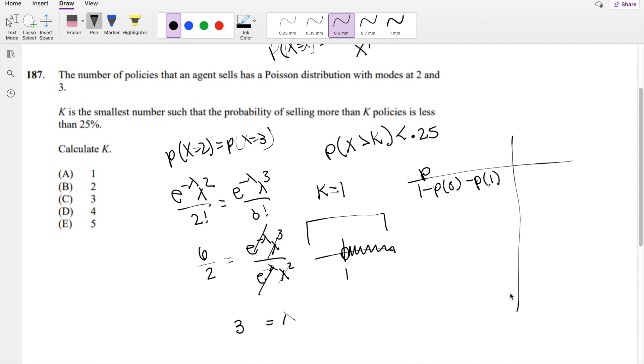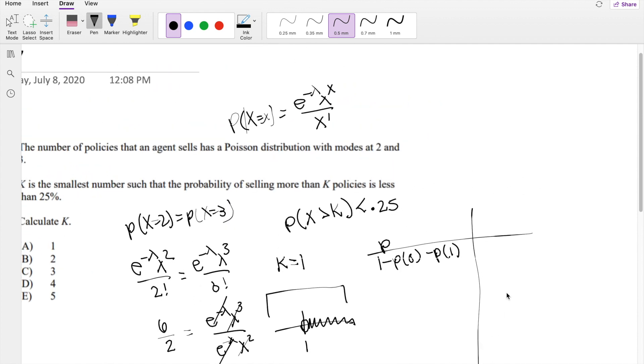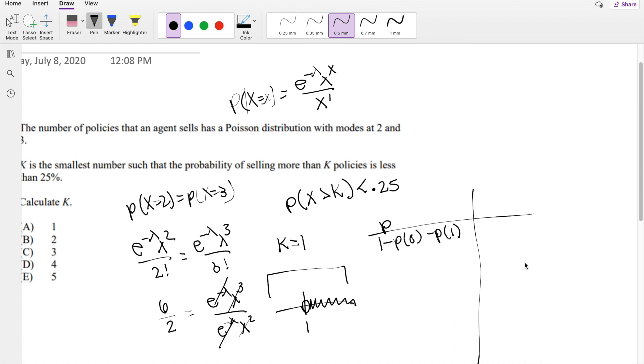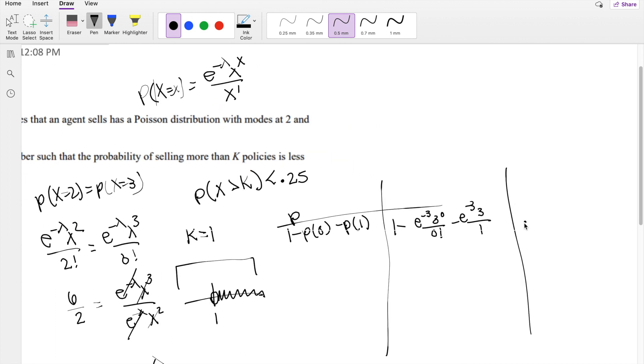Plugging into our formula e to the negative lambda, lambda to the x over x factorial with those numbers: 1 minus e to the negative 3, 3 to the 0 over 0 factorial, minus e to the negative 3, 3 over 1. This equals 0.800. Is that less than 0.25? Not quite.